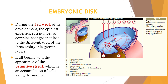This is the embryonic disc. During the third week of development, the epiblast experiences a number of complex changes that lead to the differentiation of the three embryonic germ layers. It all begins with the appearance of the primitive streak, which is the accumulation of cells along the midline. This image is an embryonic disc viewed dorsally.